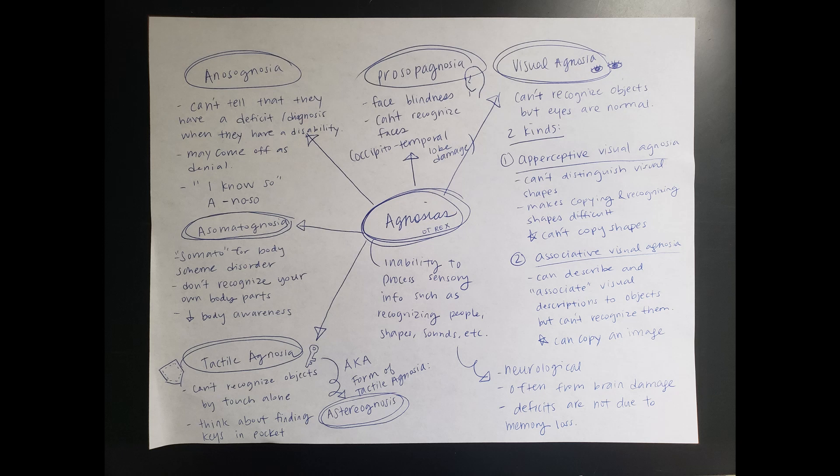Those are the two major kinds of visual agnosia. There are other types too — when you think of auditory agnosia, for example, you can break it down: auditory relates to sound, so they can't tell apart different sounds. They might not be able to distinguish a person speaking from background noise. Once you learn a couple of these, you start to understand what other agnosias would mean.